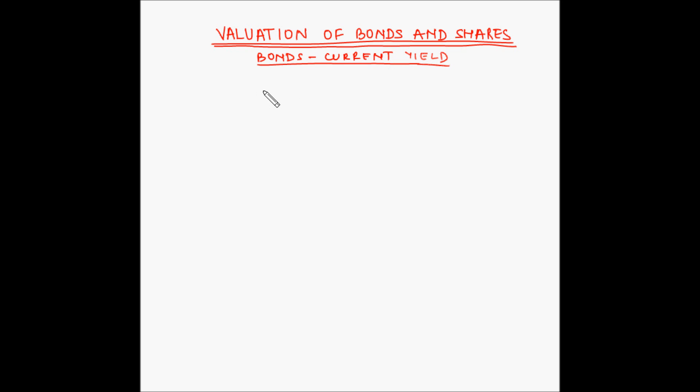As we have seen in the video for Yield to Maturity, there are three different types of yields for bonds. The three types of yields are Yield to Maturity, Current Yield, and Yield to Call.